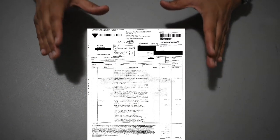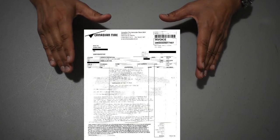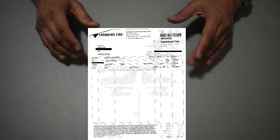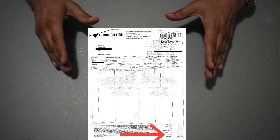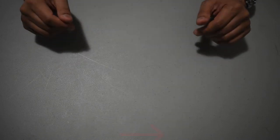Here is the actual invoice that Canadian Tire provided after they replaced the tire. As you can see, the invoice shows a total cost of over $300.